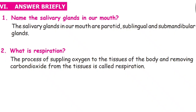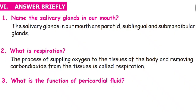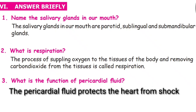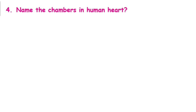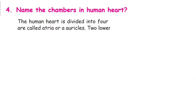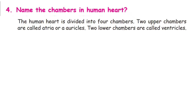Question number 3: What is the function of pericardial fluid? The pericardial fluid protects the heart from shock. Question number 4: Name the chambers in the human heart. The heart is divided into four chambers — two upper chambers are called atria or auricles, and two lower chambers are called ventricles.